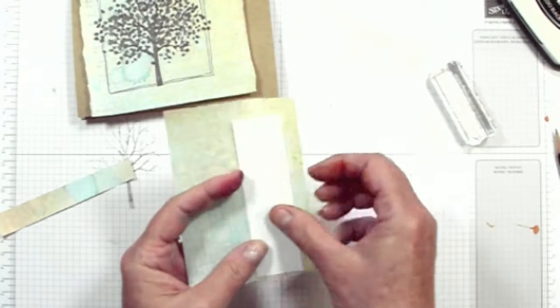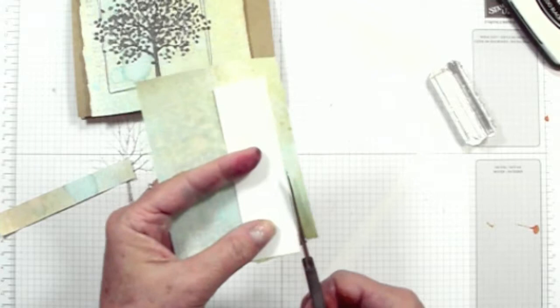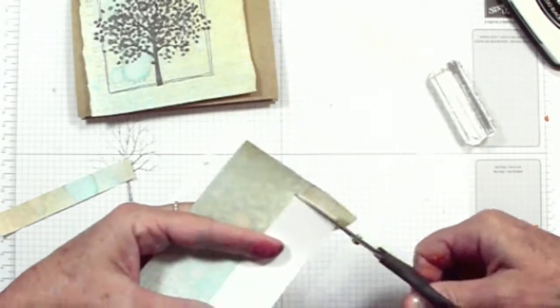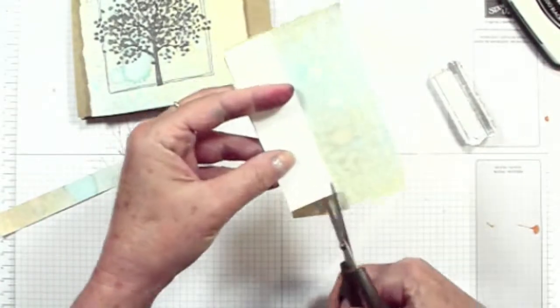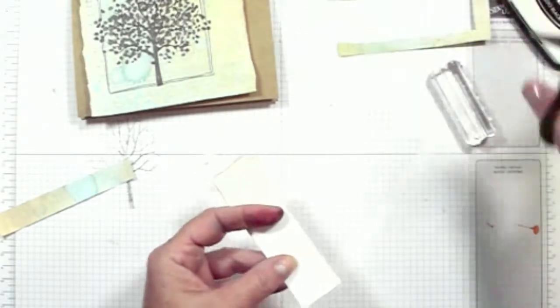So just pop your piece of white card on the top and trim around it just roughly. It's all going to be trimmed down anyway so it doesn't have to be perfect. Keep this bit, we'll put that on our insert.